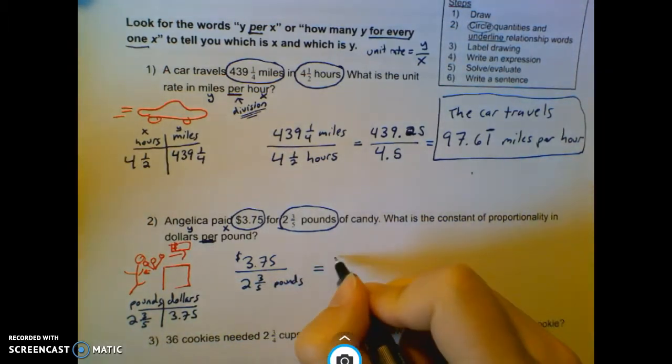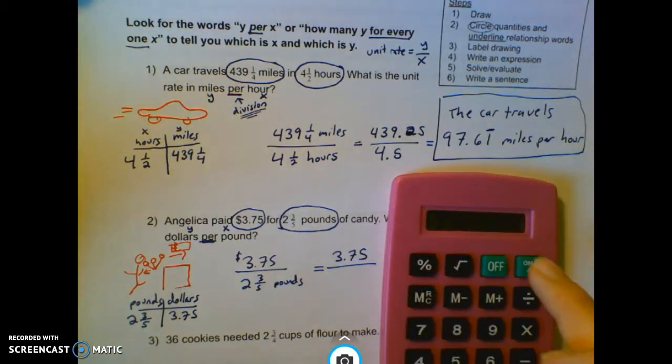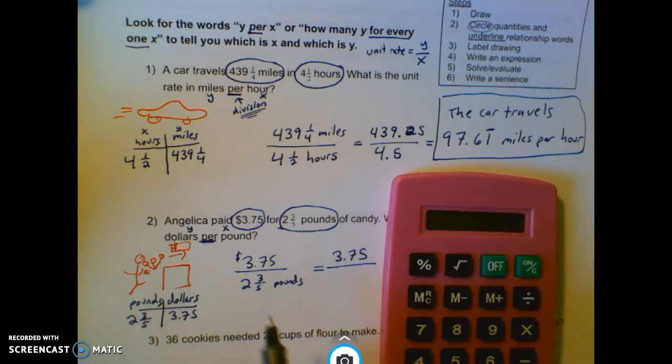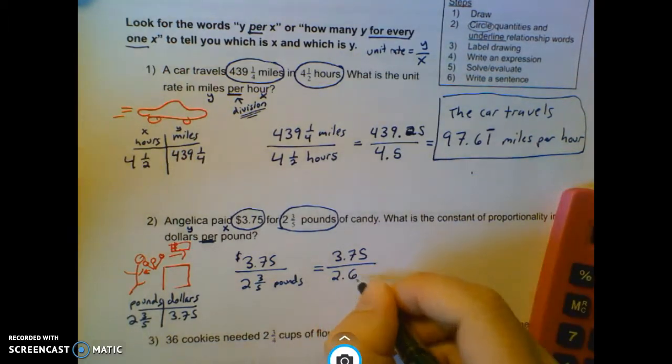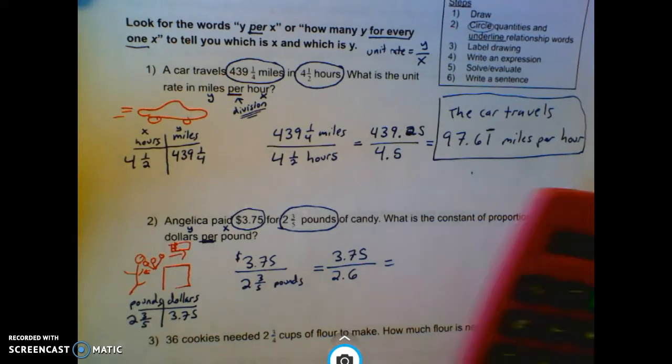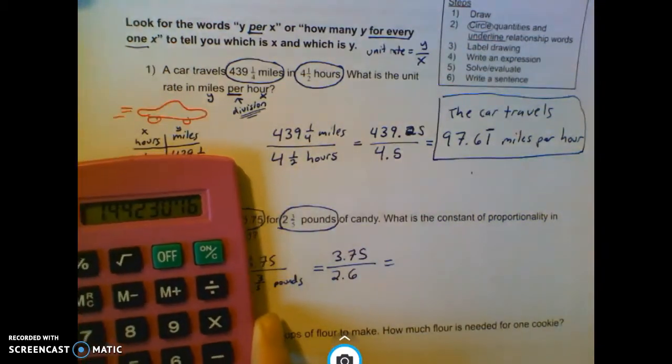Again, I want to put those as decimals so that I can use the calculator. So here, I have 2, 3 divided by 5 is 0.6. And when I divide those, I get this big long decimal.